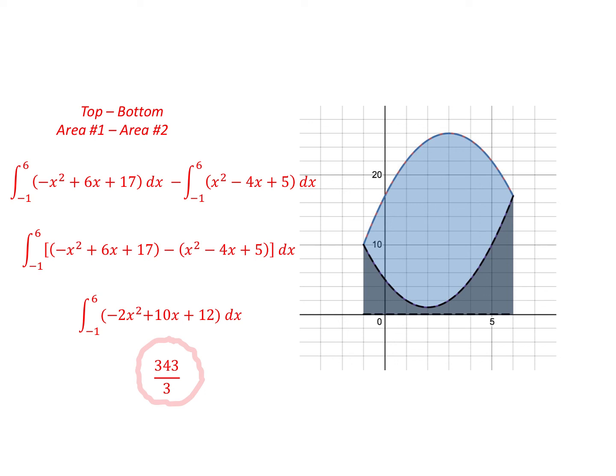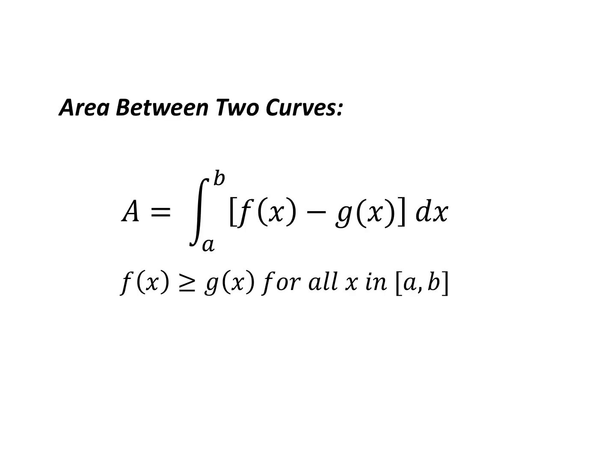So what does this tell us? Basically, it gives us the definition for the area between two curves. It's equal to the integral from a to b of f(x) minus g(x) dx, when f(x) is greater than or equal to g(x).